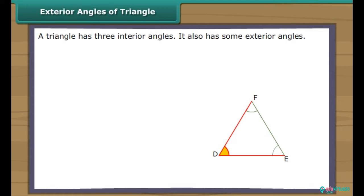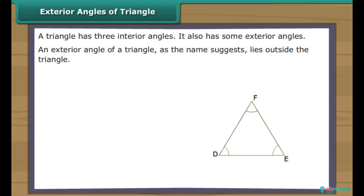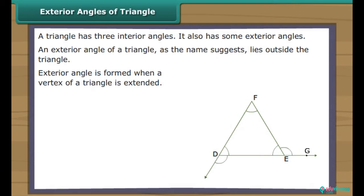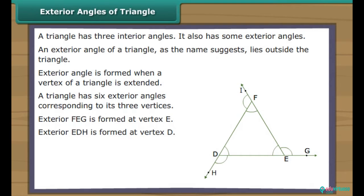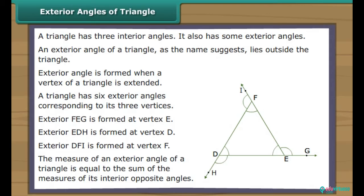A triangle has three interior angles and also some exterior angles. An exterior angle of a triangle, as the name suggests, lies outside the triangle. It is formed when we extend a vertex of a triangle. A triangle has six exterior angles corresponding to its three vertices. If we extend vertex E of triangle FDE, exterior angle FEG is formed. Similarly, when we extend vertices D and F, exterior angles EDH and DFI are formed. The measure of an exterior angle of a triangle is equal to the sum of the measures of its interior opposite angles.